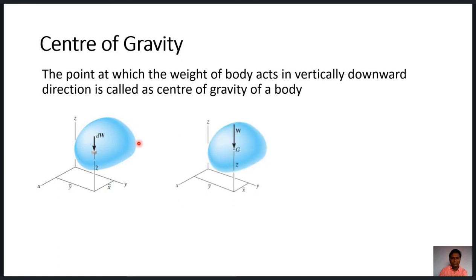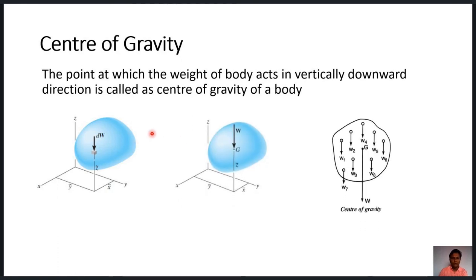To understand this, let us take one example of a body. As we know, the body consists of a number of small elemental particles. All these small elemental particles have some weight, and these weights act in the vertically downward direction. If we find the resultant of all these small elemental weights, we can represent it by a total weight W.